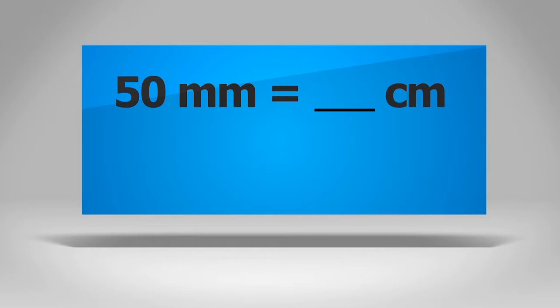Convert 50 millimeters to centimeters. The conversion is from millimeters to centimeters. Millimeters are smaller than centimeters. When you are converting from small to big, you divide. Because one centimeter equals 10 millimeters, divide 50 by 10 to get 5 centimeters. So 50 millimeters equals 5 centimeters.